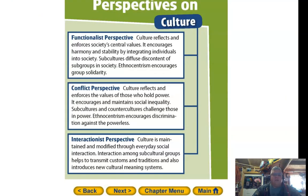Functionalist perspective: culture reflects and enforces society's central values. It encourages harmony and stability by integrating individuals into society. Subcultures diffuse discontent among subgroups. Ethnocentrism encourages group solidarity. Conflict perspective: culture reflects and enforces the values of those who hold power. It encourages and maintains social inequality. Subculture and counterculture challenge those in power. Ethnocentrism encourages discrimination against the powerless.